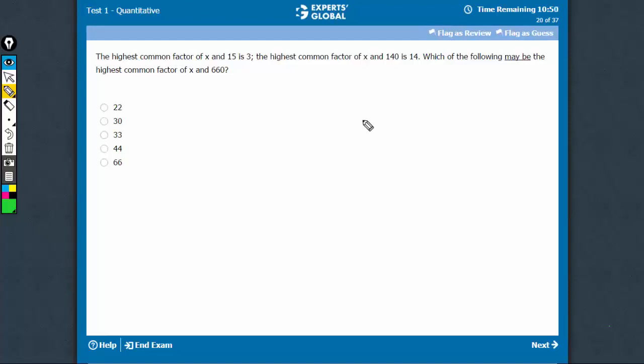The highest common factor of x and 15 is 3. This means x has 3 and x does not have 5. Otherwise, it would be 15. This is the main concept involved here.